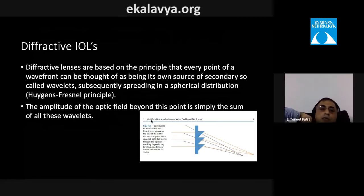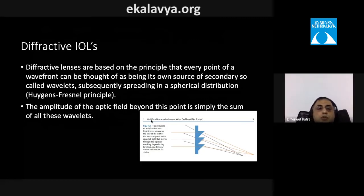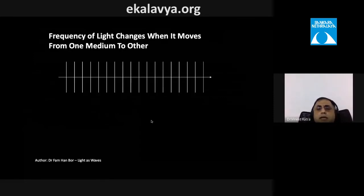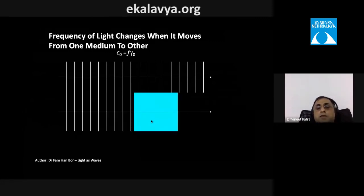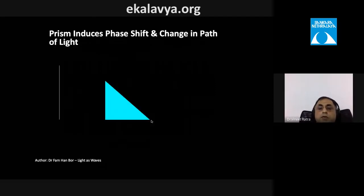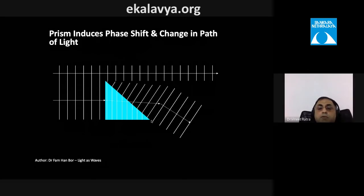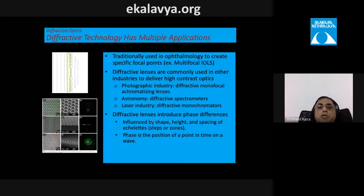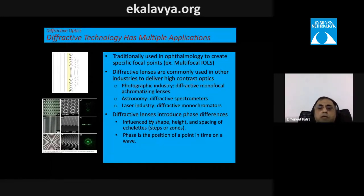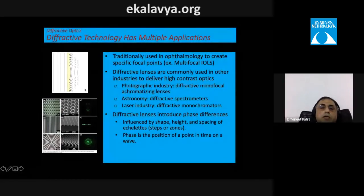Diffractive IOLs are based on Huygens-Fresnel principles, in which every point of a wavefront acts as a secondary source of wavelets. The sum of these wavelets creates the optical field. Diffraction combined with the change in speed of light through the lens medium bends rays to focus at specific points. This technology — also used in photography, astronomy, and laser industries — produces designs with varying step height, width, and spacing.